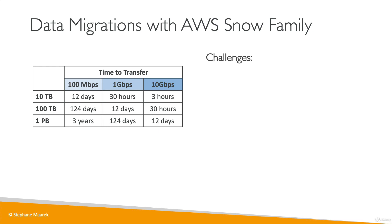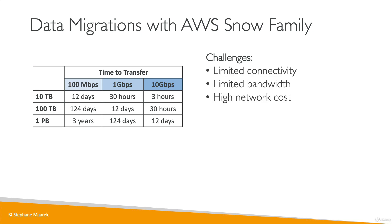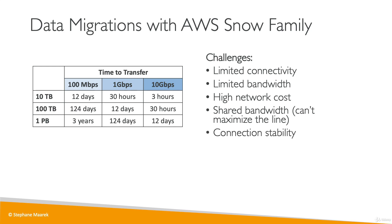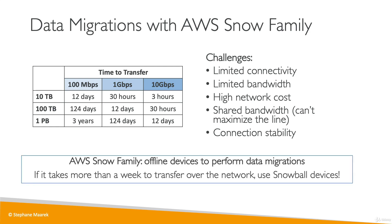The challenges include limited connectivity, limited bandwidth, and the fact that transferring data over the network costs money — it's not free. The bandwidth may also be shared; for example, if you download 10 terabytes of data from AWS, you could block your entire office by maximizing the bandwidth. The connection may not be stable enough, requiring retries. All these reasons make a case for the Snow Family.